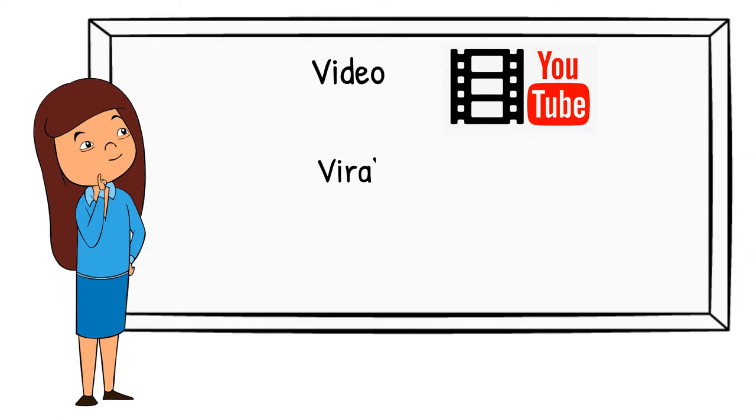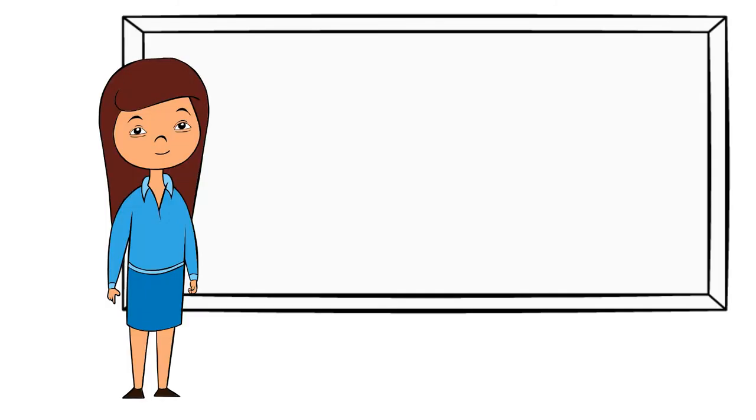Viral. This can be pertaining to a virus, but it can also be if a video goes viral, it means it gets a lot of views. Virus. Like the COVID-19 virus. It's an illness. Version. What version of Microsoft Office are you using?